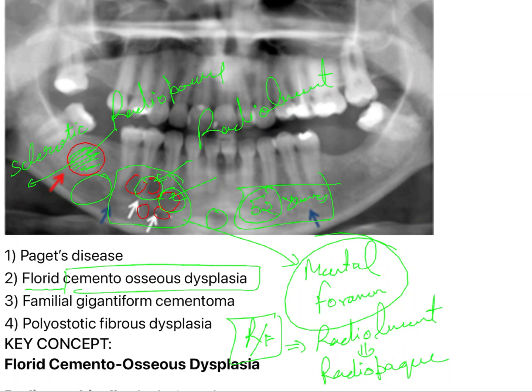If infection occurs, there will be osteomyelitis in this patient, and that is why we have to follow preventive management in these kinds of patients. Whenever there is osteomyelitis, we have to go for surgery and antibiotics have to be prescribed.